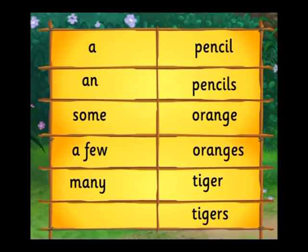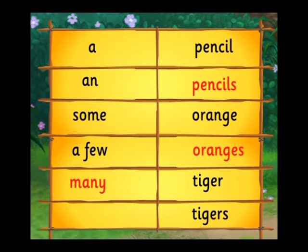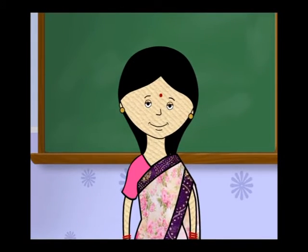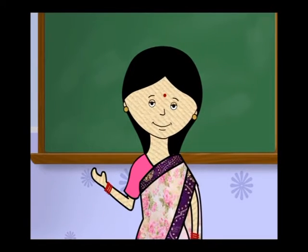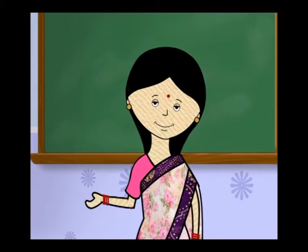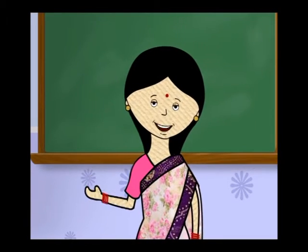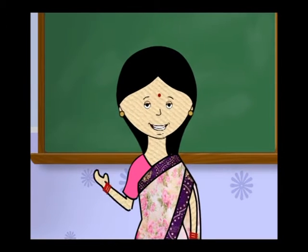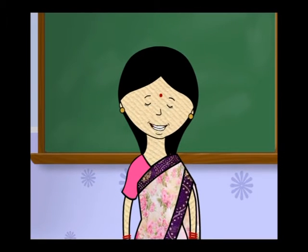Group A, many pencils. Many oranges. Many tigers. Good. You use some, a few and many when you talk of more than one thing.